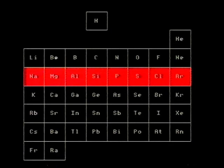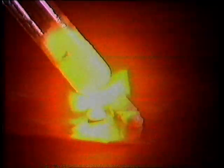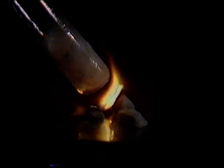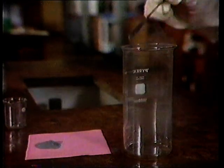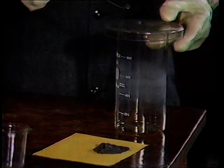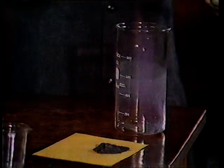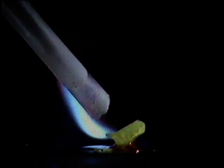Interesting patterns also occur moving across the table. For instance, all these elements react with fluorine. This is fluorine and sodium. The reaction's fairly lively. So is the reaction between magnesium and fluorine. And now, aluminium powder and fluorine. This is silicon and fluorine. This is phosphorus and fluorine. And this is sulfur. It may not look it, but there is a pattern.